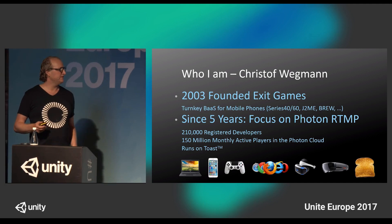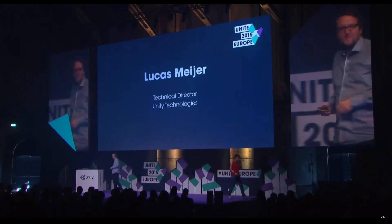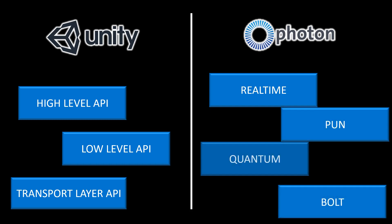Many of you ask how can I build a multiplayer game. To answer this question you have to meet two people. This is Chris, founder and CTO of Exit Games, and Exit Games is a company that made a multiplayer engine called Photon. This is Lucas Meyer, technical director of Unity. They compete against each other to make the best multiplayer online engine. If you go to those websites you find a lot of buzzwords: high-level API, low-level API, transport layer API, real-time, PUN, Bolt, Quantum — so many options to choose from.